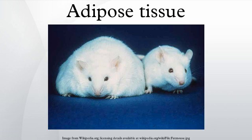Obesity or being overweight in humans and most animals does not depend on body weight, but on the amount of body fat, or more specifically, adipose tissue. The two types of adipose tissue are white adipose tissue and brown adipose tissue. The formation of adipose tissue appears to be controlled in part by the adipose gene. Brown adipose tissue was first identified by Swiss naturalist Conrad Gessner in 1551.